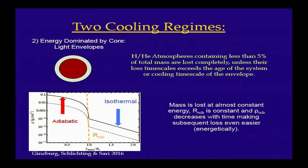Where does the five percent threshold come from? If you write down the heat capacity of an ideal gas and take the ratio between the envelope and the core, it's basically just the ratio of the mean molecular weights. That gives you this five percent number, if you assume Earth-like mantle and core compositions and a hydrogen-helium envelope.